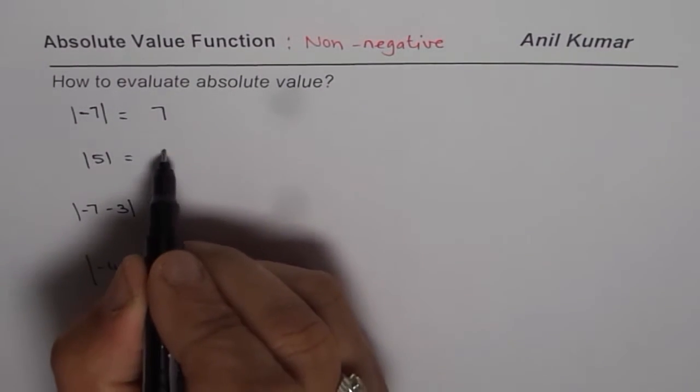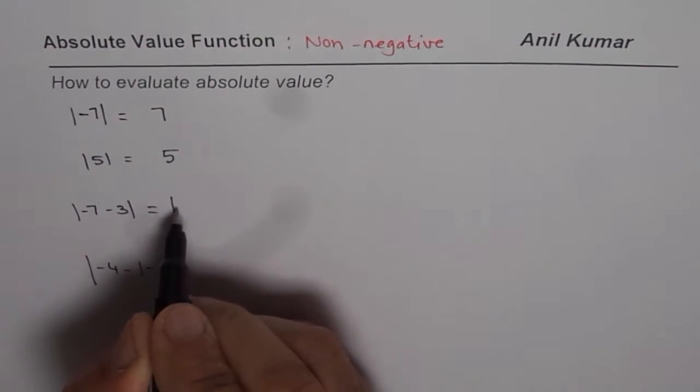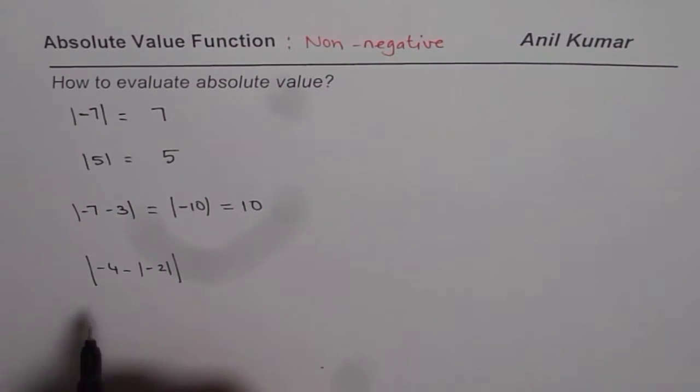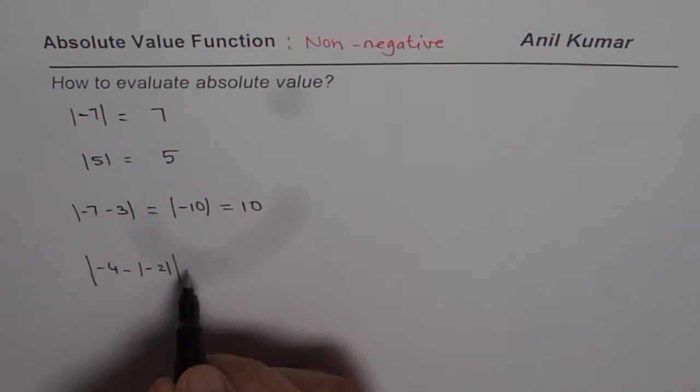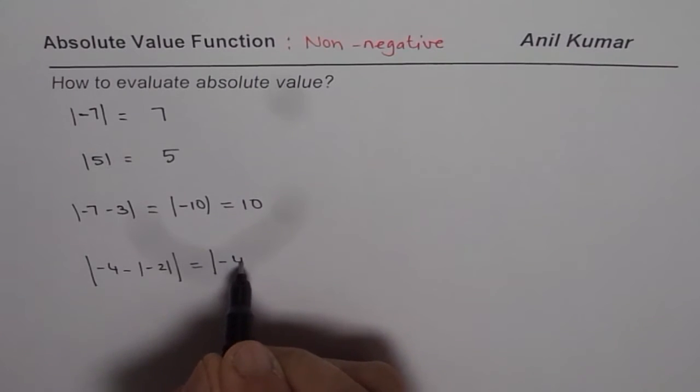Minus 7 absolute value is 7. 5 absolute value is 5. Here -7 minus 3, if you do inside we get -10, and absolute value of -10 is 10.